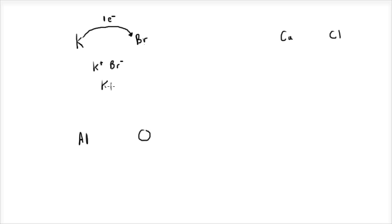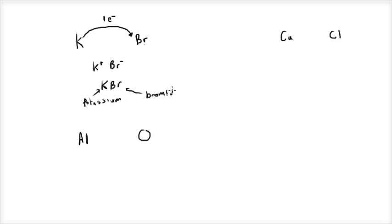You've got potassium bromide. The way to name these is you say the cation first — potassium — followed by the anion, but you make that element's name into an '-ide'. So instead of bromine, you say bromide. That's potassium bromide. Pretty straightforward.